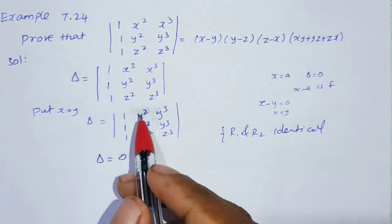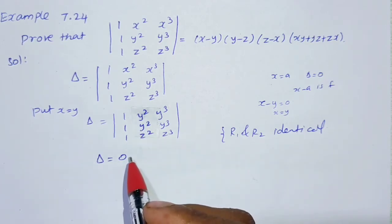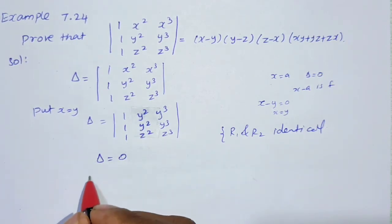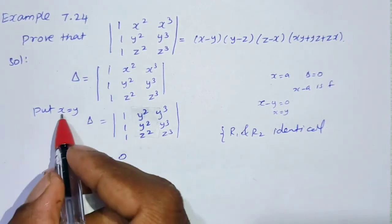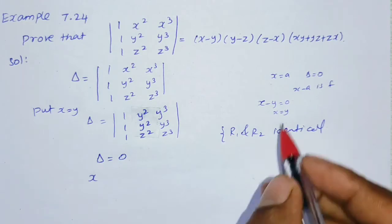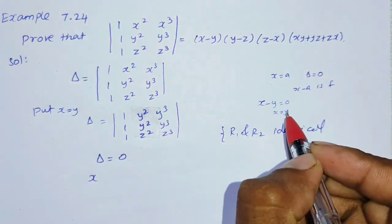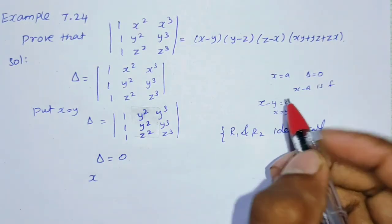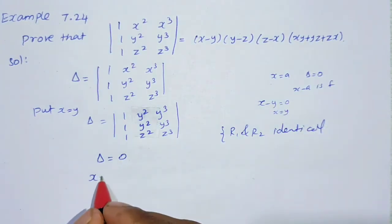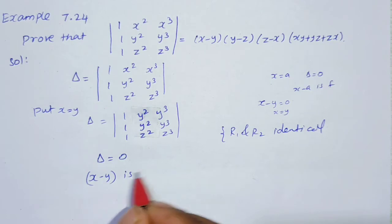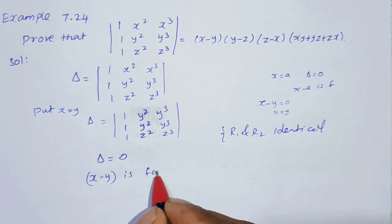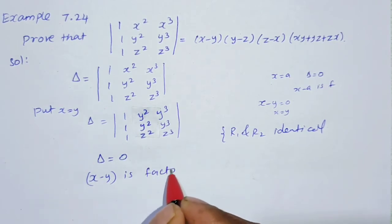Since delta equals zero when x equals y, x minus y is a factor of delta.